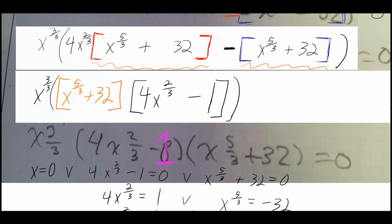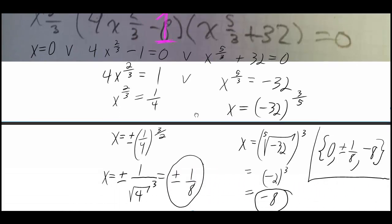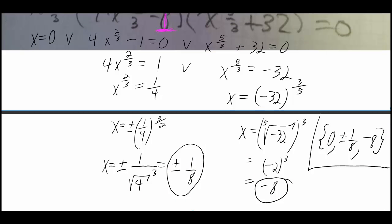And then you set each factor equal to 0. So you say x is equal to 0 or 4x to the 2 thirds minus 1 is equal to 0, or x to the 5 thirds plus 32 is equal to 0. And then when you solve it for x for each one, you'll get 0, plus or minus 1 eighth, or negative 8.